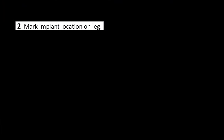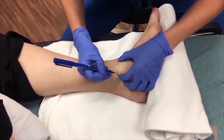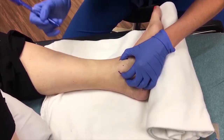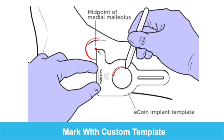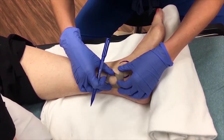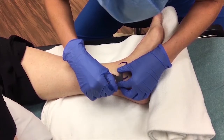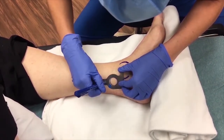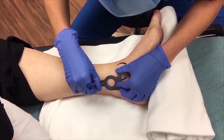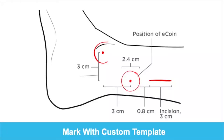Step 2: Mark Implant Location on Leg. Palpate, then mark the anterior and posterior borders of the medial malleolus, then mark the midpoint. Place the template in position and use a marking pen to draw a circle along the inner edge of the large opening — this circle indicates the surface projection of the ECOIN device position. Next, mark a straight line through the narrow slot; this line indicates the planned incision. A summary of the markings is shown on this diagram.